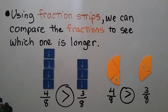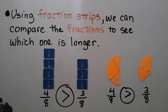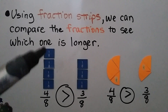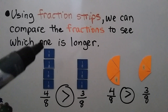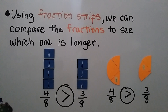Using fraction strips — or we can even use fraction circles — we can compare the fractions to see which one is longer. Here we have 4 eighths, which is 4 one-eighth pieces. Here we have 3 eighths, which is 3 one-eighth pieces. And we can see this one is longer — it's larger. So 4 eighths is greater than 3 eighths.